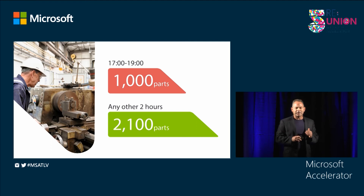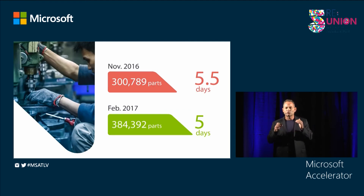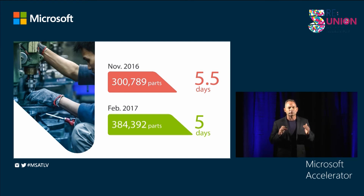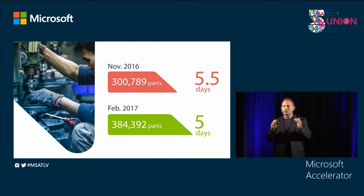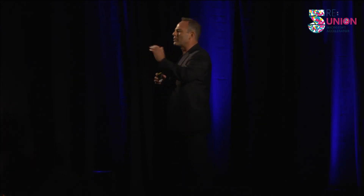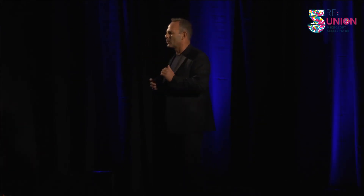The results of implementing these two simple procedures were just fantastic. In November 2016, this work cell was producing 300,000 parts while working only five and a half days a week. By February 2017, this work cell was already producing 384,000 parts while working only five days a week.